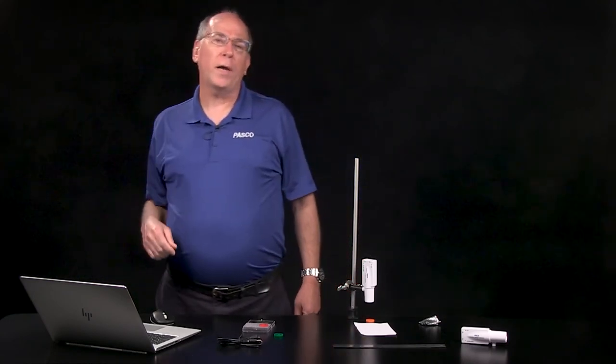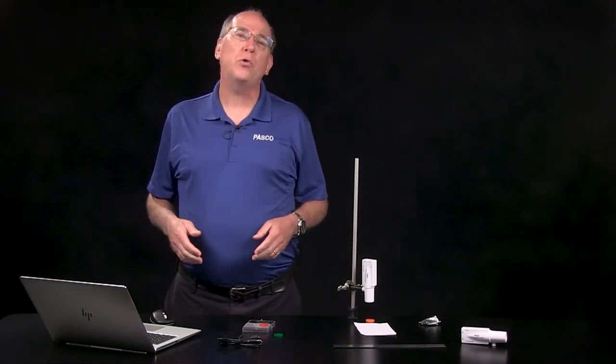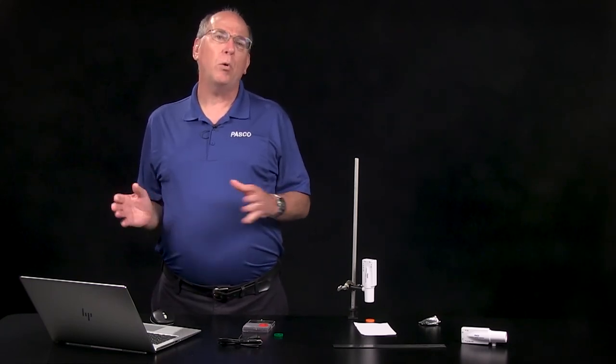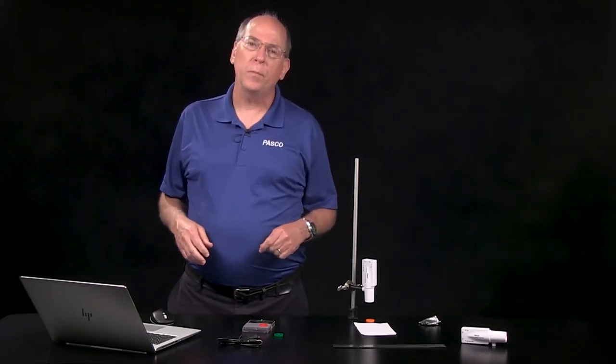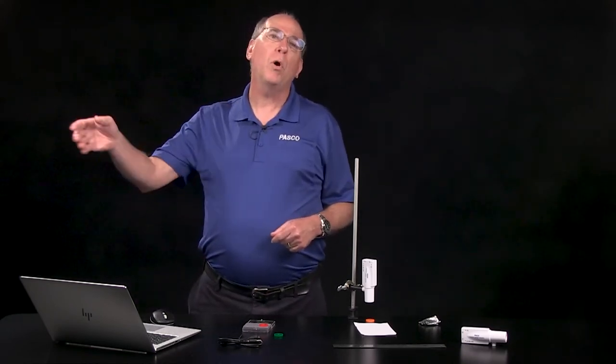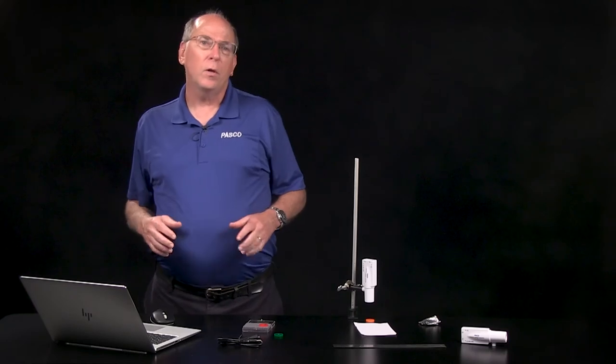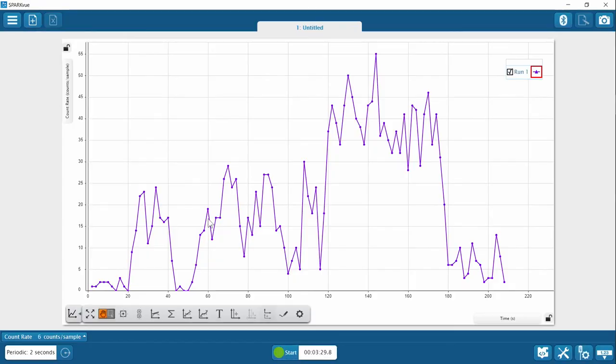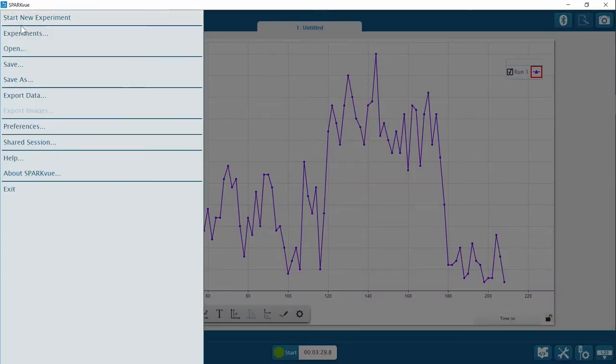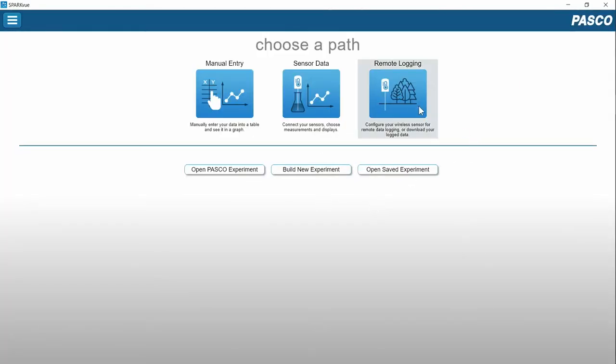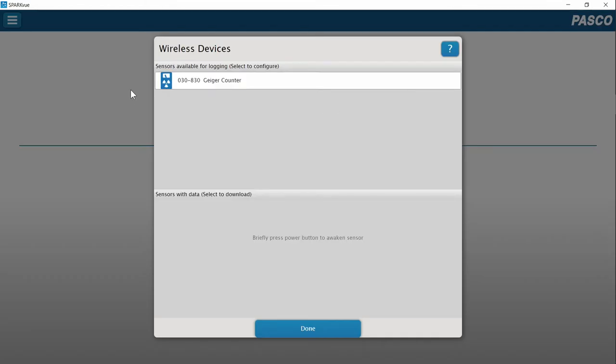Remote data logging is an exciting new feature of the wireless Geiger counter. It allows background radiation to be measured at remote locations and while traveling. Just set it up, put it in your backpack and forget it. Remote logging does the rest. Let's set it up to measure the background radiation. I click Start New Experiment and now select Remote Logging.